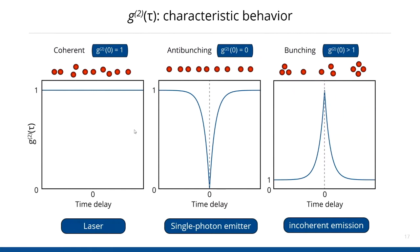There are three characteristic behaviors for a G2 function. If you have a laser or coherent source, light is distributed in time in a Poissonian distribution — fully random — and your G2 will be flat at one. This is a way to identify a laser. For a single photon emitter or quantum emitter, such as a nitrogen vacancy center, quantum dots, or a single molecule, the system cannot emit more than one photon at a time. So the two single photon detectors will never register an event simultaneously, leading to a dip in the G2 function known as anti-bunching. This measurement is very common in quantum optics and is used to prove you have a single photon source.